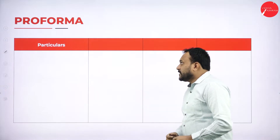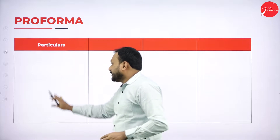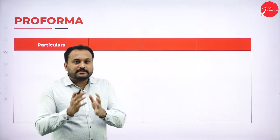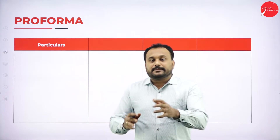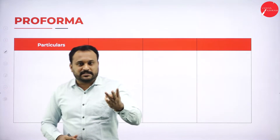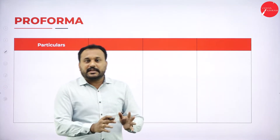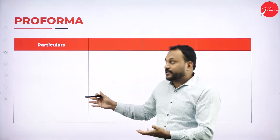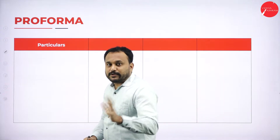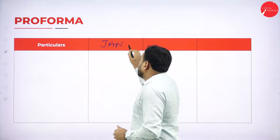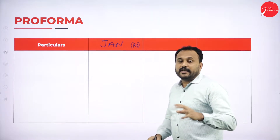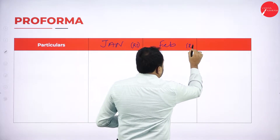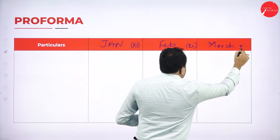Let's go with the pro forma of cash budget. Cash budget is prepared on the basis of months — we have 12 months from January to December. Whichever months they tell us to prepare, we go with those. Usually they give three months; minimum is three and maximum is four months. Even if they tell you to prepare for 12 months, we can do it because we know the format. For example, if I prepare for January, February, March, I write January, then February, then March — each column denoted in rupees.